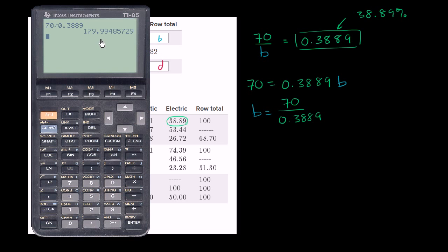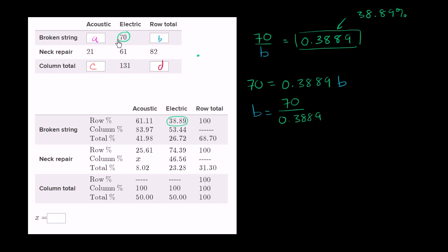She wouldn't fix a fraction of a broken string, so it's safe to round to the nearest whole number. That gives us B equals 180 — she fixed a total of 180 broken strings. If B equals 180, we know that A plus 70 equals 180, so A must be 110. (180 minus 70 is 110.)